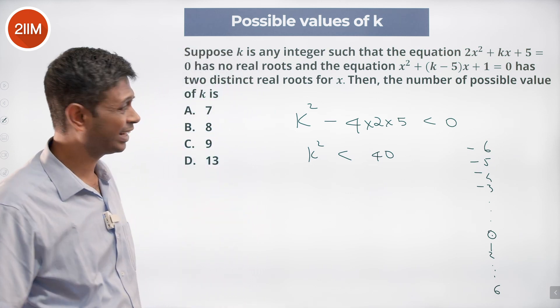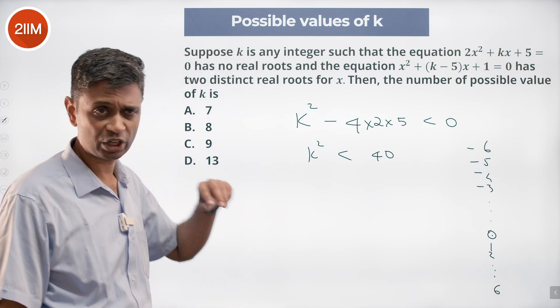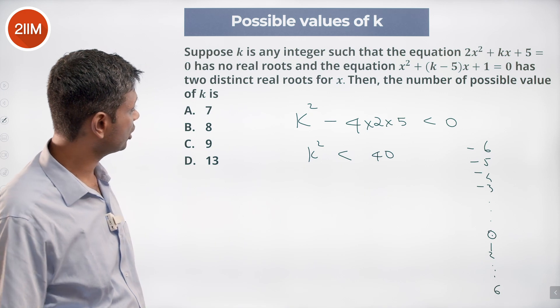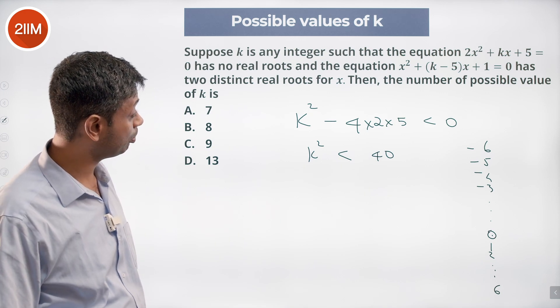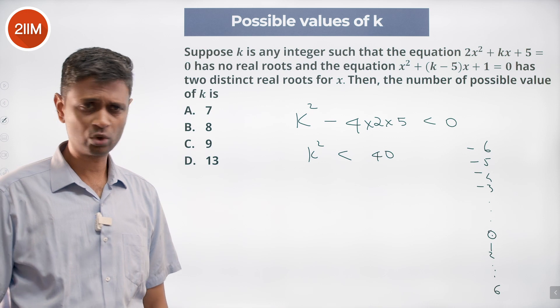We have 13 values with us here. Most likely 13 is not the answer because there's one more condition: the equation x² + (k - 5)x + 1 = 0 has two distinct real roots.